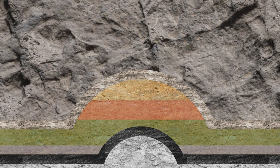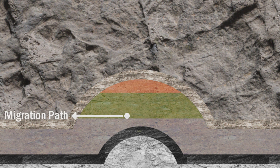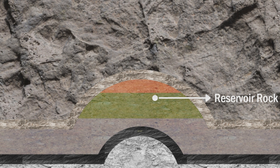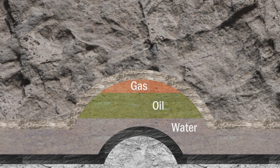As hydrocarbons are formed, they start migrating upward due to their lower density compared to water. Hydrocarbons move upward through the migration path in a process called primary migration, until they enter into the reservoir rock and accumulate within. After entering the reservoir rock, hydrocarbons migrate upward inside the reservoir rock itself in a process called secondary migration. As a result, a sequence is formed in which gases are on the top, oil is in the middle, and water is at the bottom.